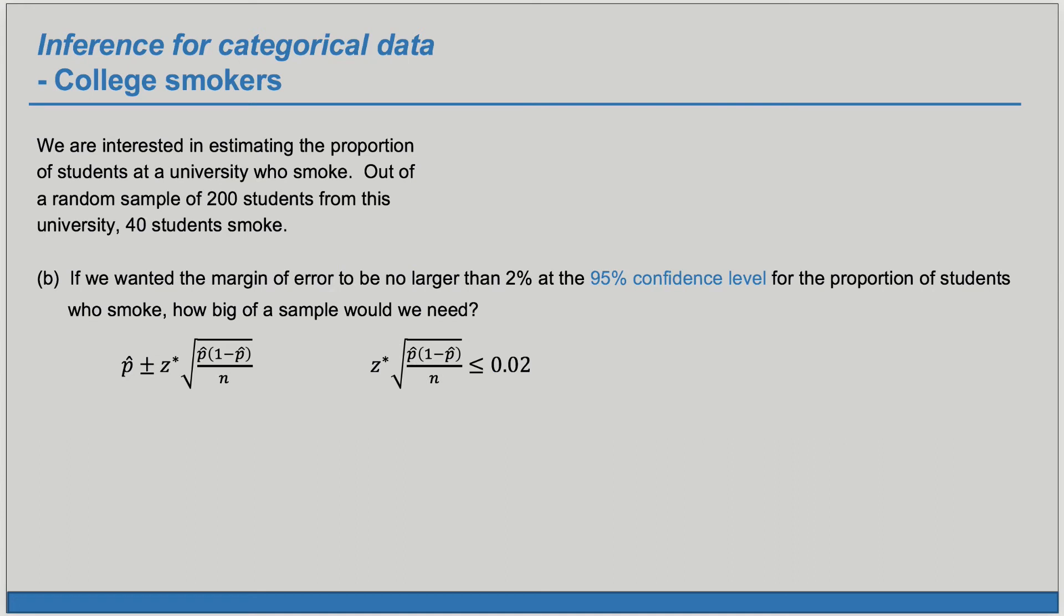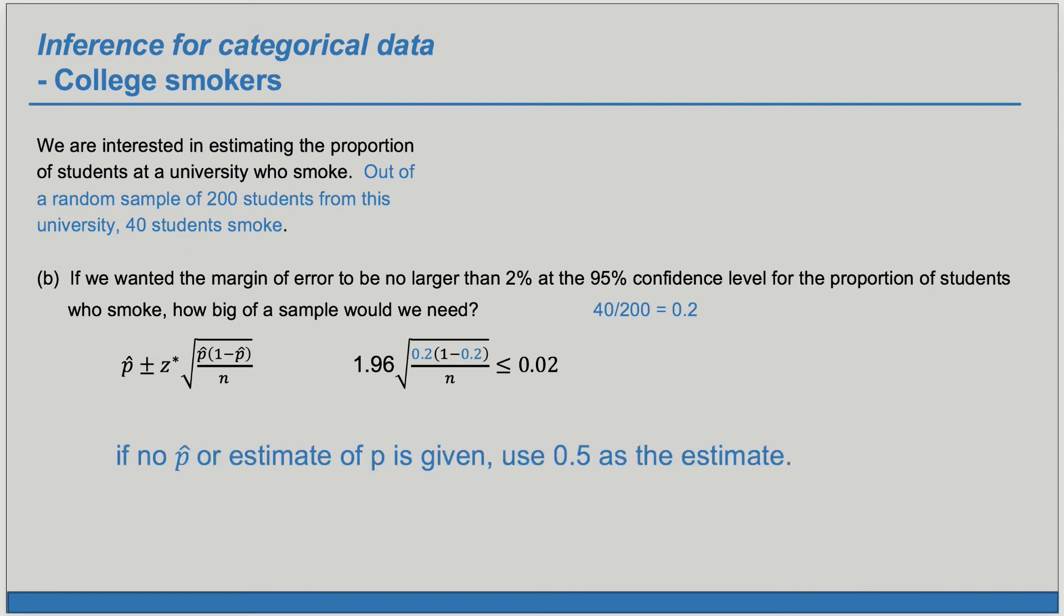Because we're using 95 percent confidence level, we know z-star is 1.96. Here we actually have a p-hat, a sample proportion that's 40 out of 200, which is 0.2. Now in most cases when you're trying to anticipate what sample size you should use, you won't have a good estimate for the true proportion. So if no sample proportion or estimate of p is given, use 0.5 as the estimate.